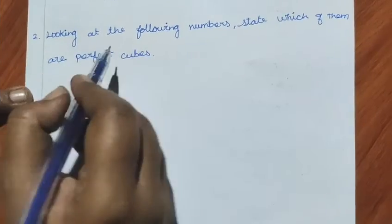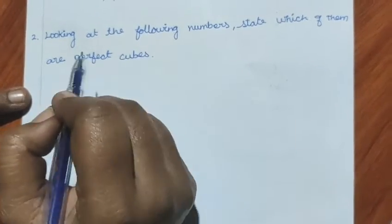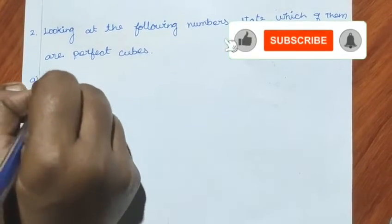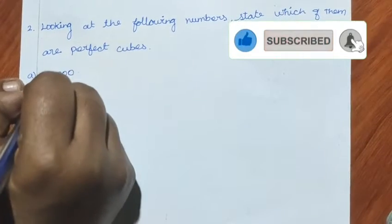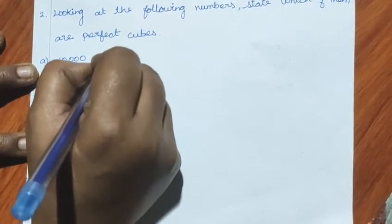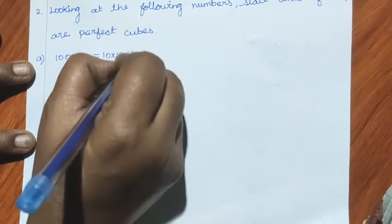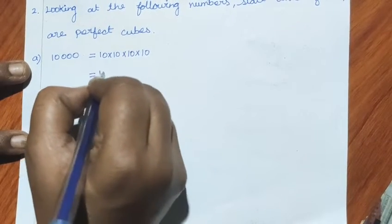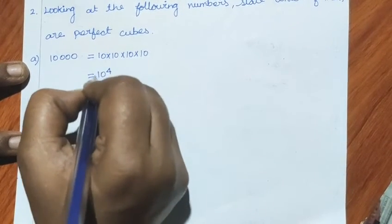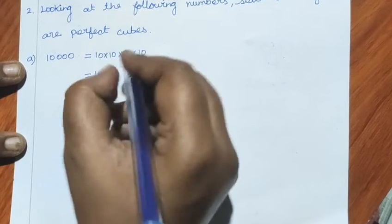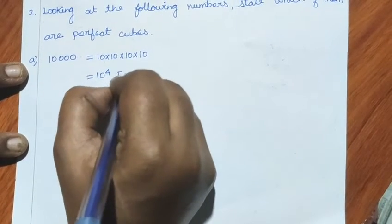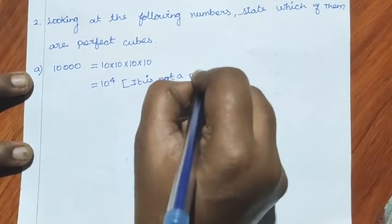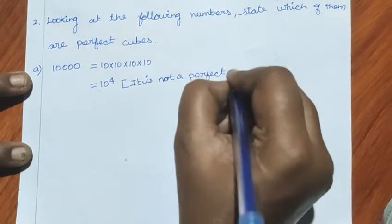Now look at the following numbers — state which of them are perfect cubes. First, A sum: 10,000. We can write 10,000 as 10 into 10 into 10 into 10, which is 10 to the power 4. Since 10 power 4 is not a perfect cube, it is not a perfect cube.